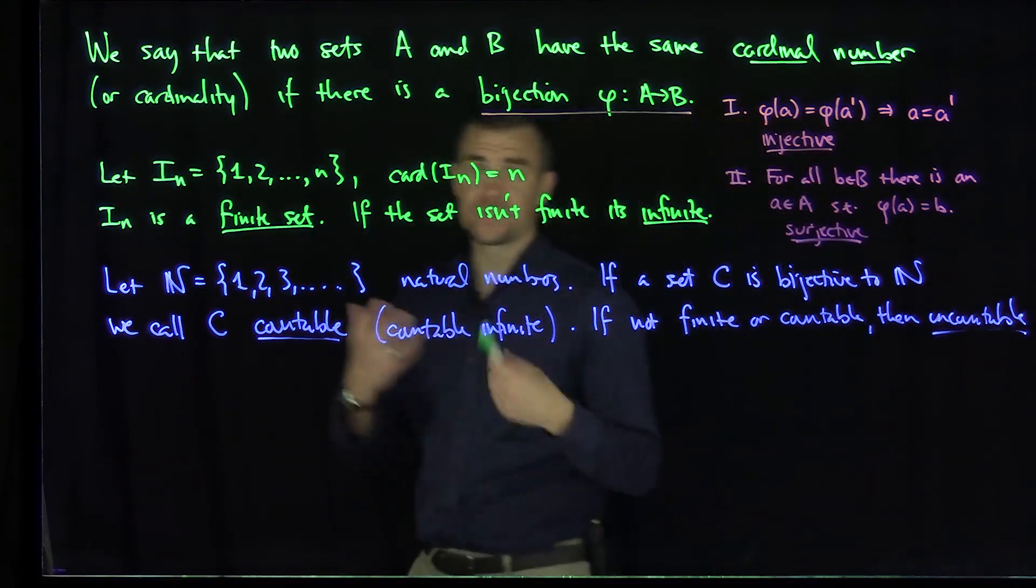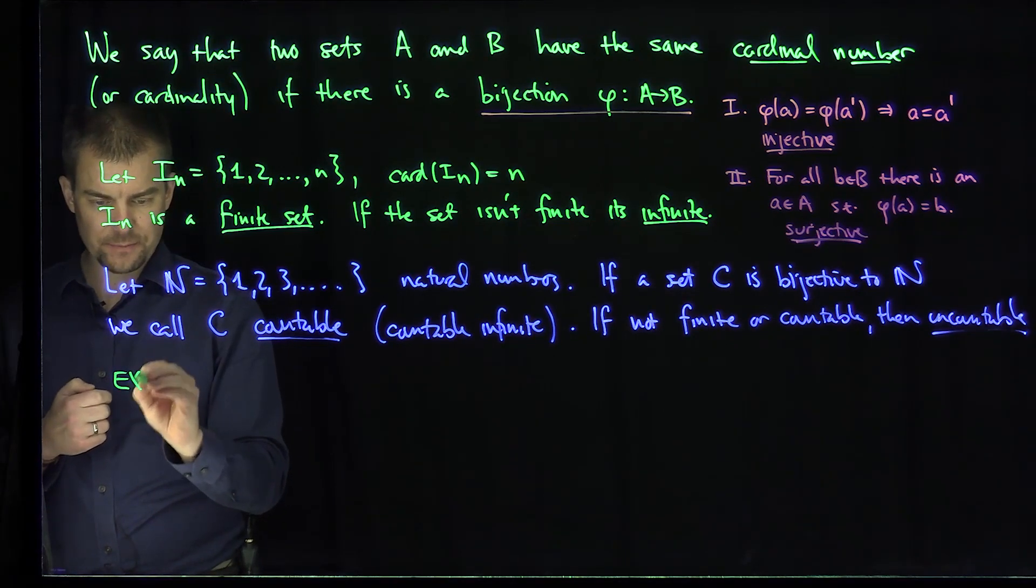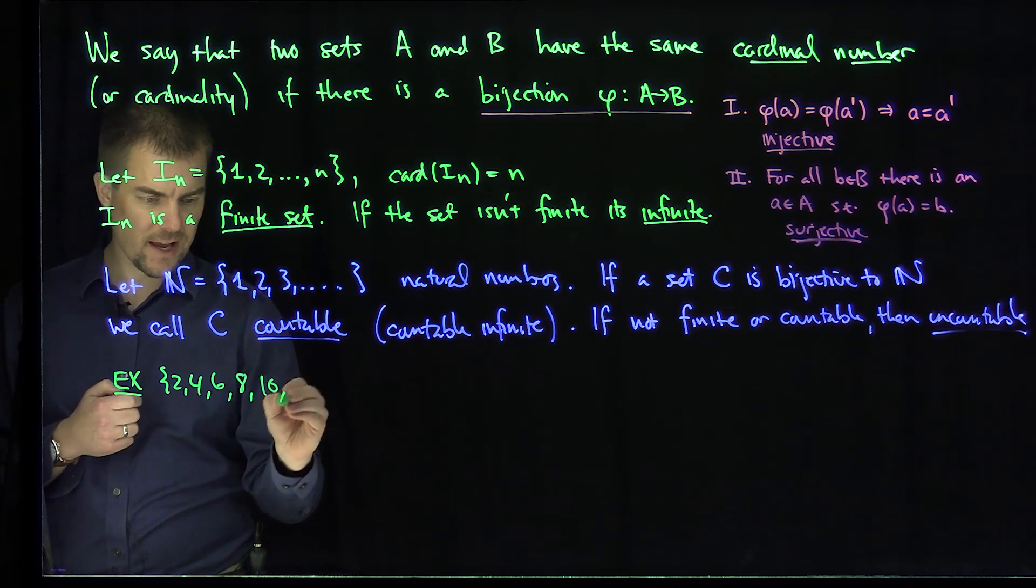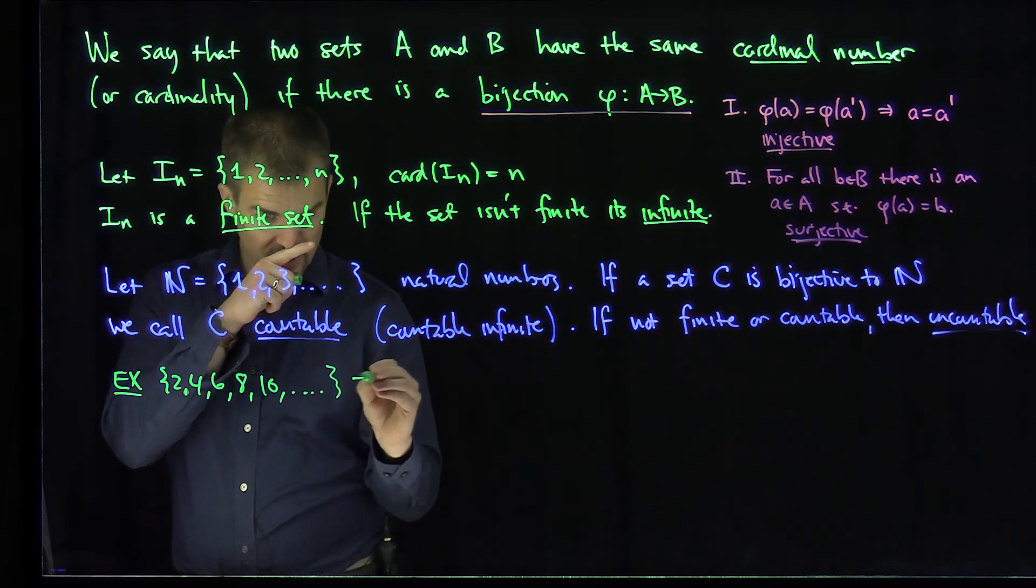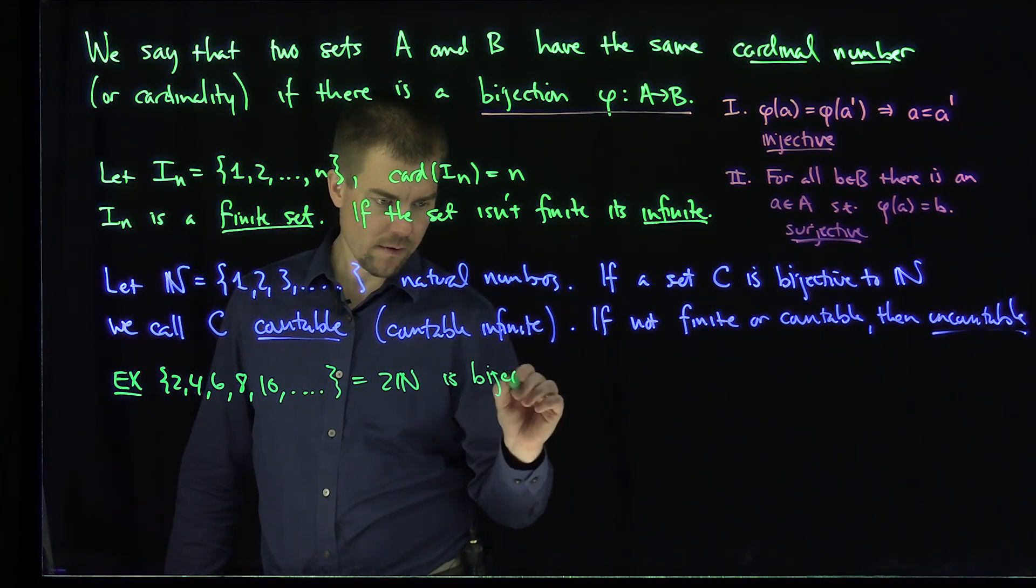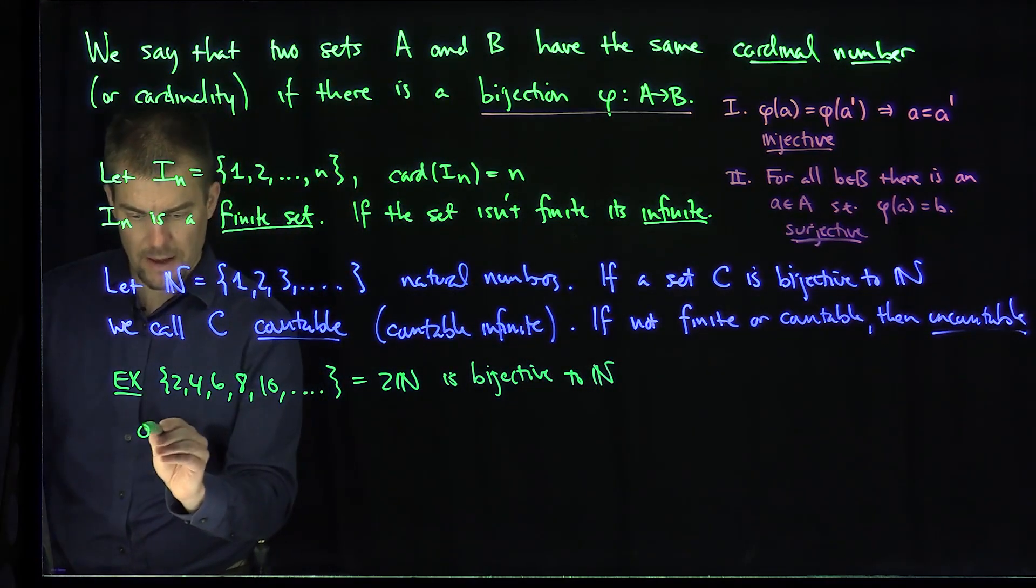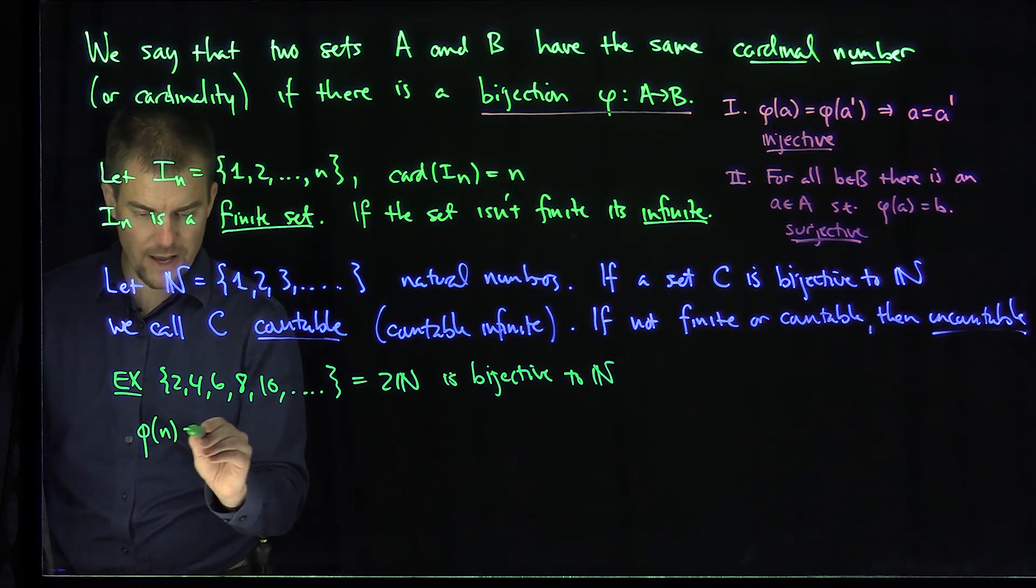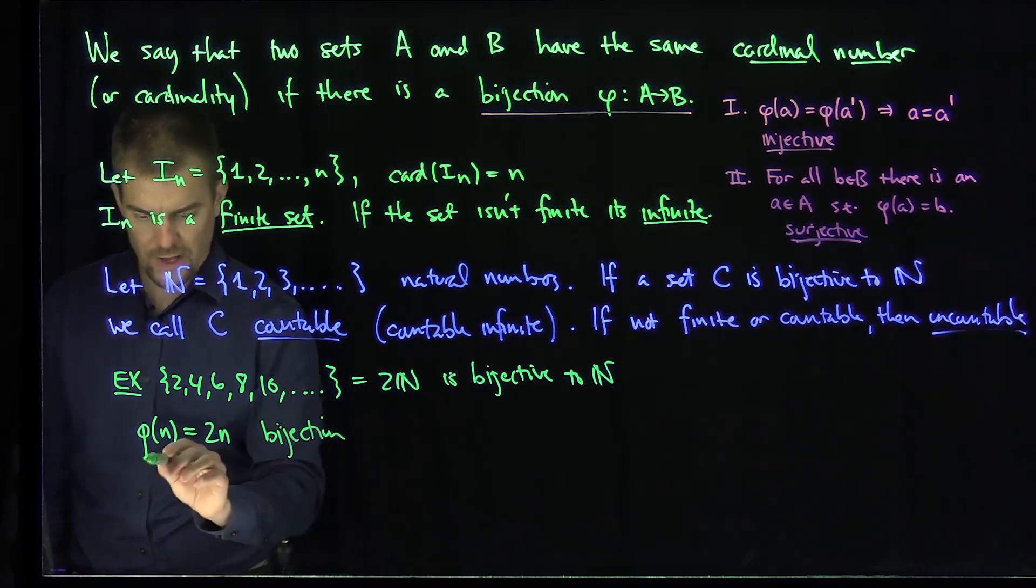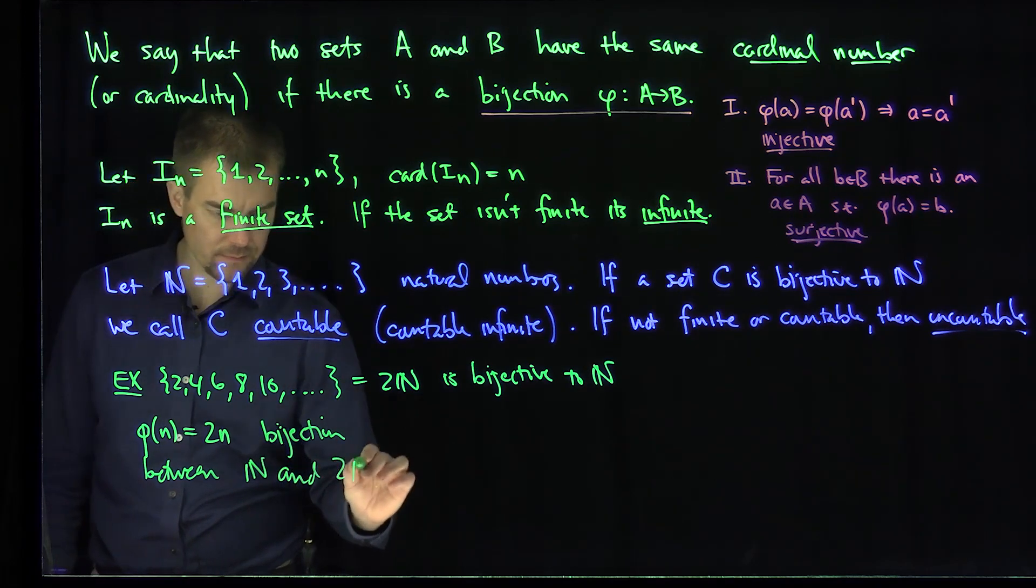There are some classic examples of sets that are bijective to N. For example, if I look at the set 2, 4, 6, 8, 10, etc., that's the set 2N. This set is bijective to N. In fact, what we can do is look at a map phi that takes a natural number n and maps it to twice n. It's a bijection between N and 2N.